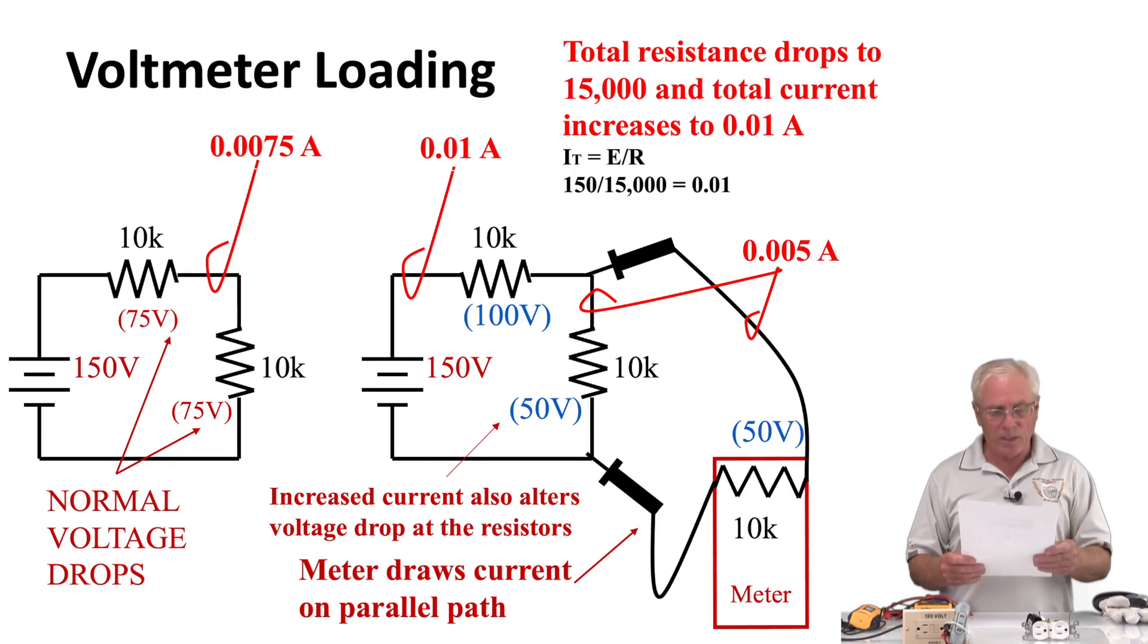Looking at the third slide, you'll see on the left I'm showing our normal circuit as we described it in the previous slide, and I have 75 volts dropped across each of my 10k resistors. On the next drawing to the right, you'll see I applied a voltage meter to take a voltage measurement across the second resistor. And this meter, I'm going to say, has a 10,000 ohm or 10k ohm input on the meter. Because of that, it's going to draw a certain amount of current.